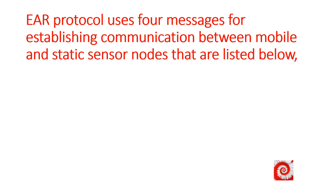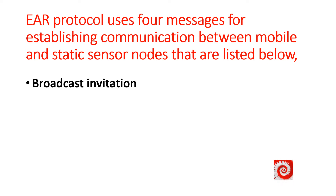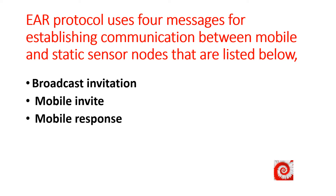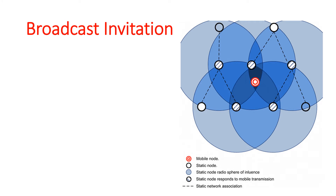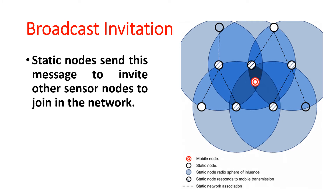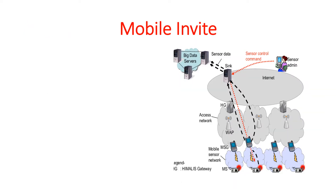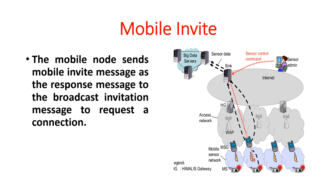EAR protocol uses four messages for establishing communication between mobile and static sensor nodes: broadcast invitation, mobile invite, mobile response, and mobile disconnect. The first message is broadcast invitation — the static node sends this broadcast invitation to invite other sensor nodes to join the network. The next message is mobile invite, where the mobile node sends a mobile invite message as a response to the broadcast invitation message to request a connection.